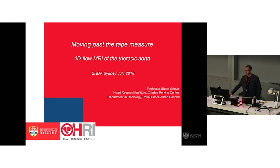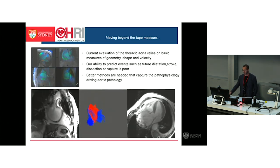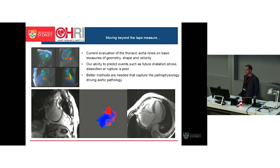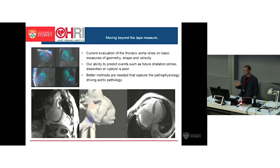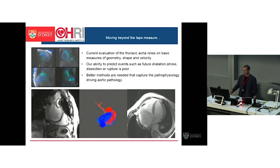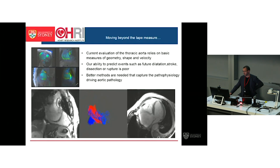I'm going to talk about using MRI to evaluate the ascending aorta and to an extent the AV. The relevance is what we're doing with TAVI is trying to fix the flow and prevent future complications. The title refers to a large project called Beyond the Tape Measure, which is basically saying measuring geometry and simple flow metrics is probably not covering the risk or describing the pathophysiology that occurs in abnormal flow situations that cause dissections and further dilatation.